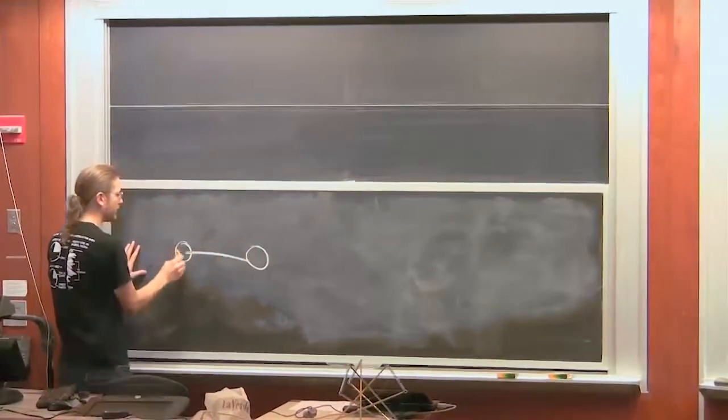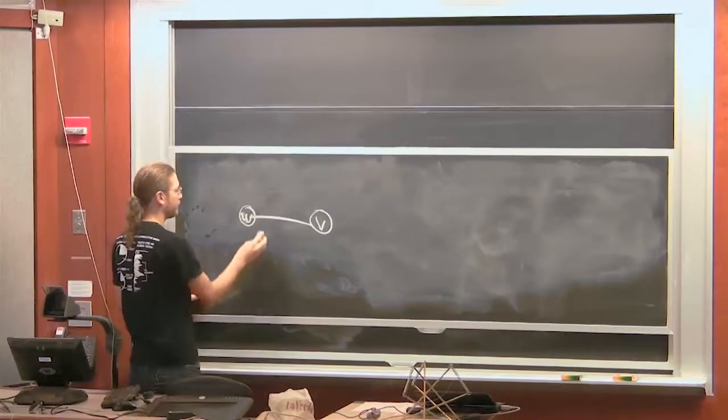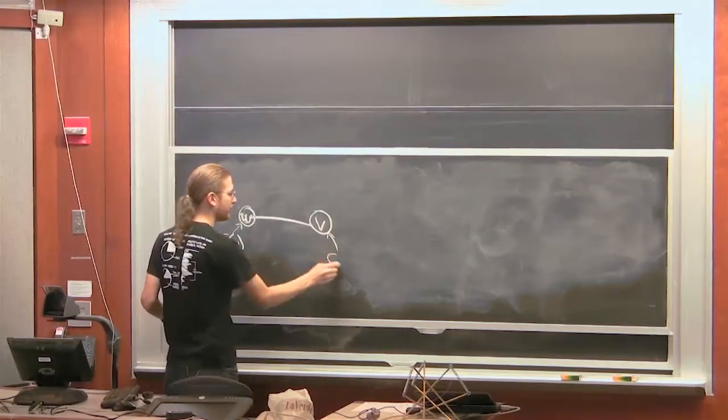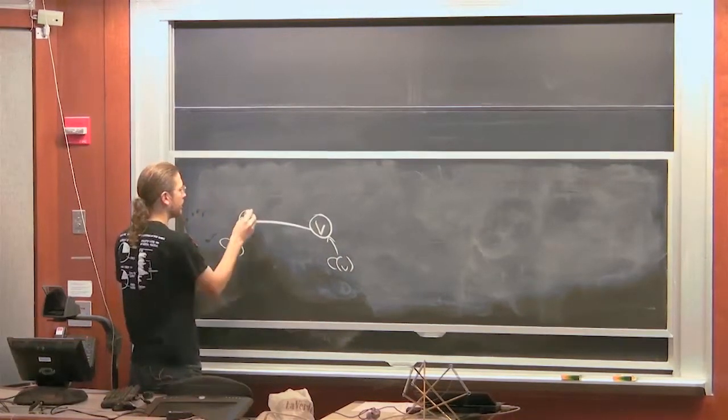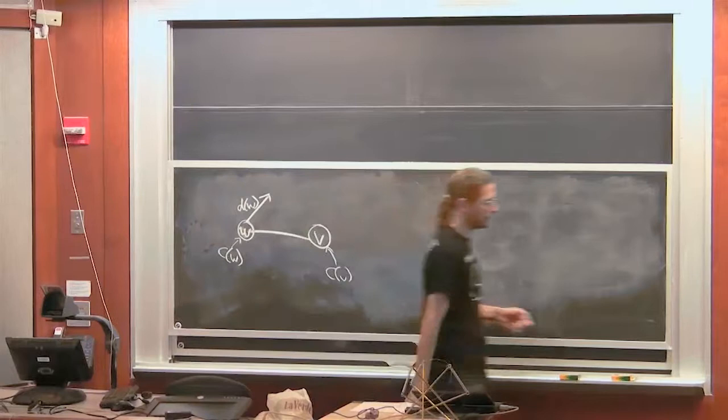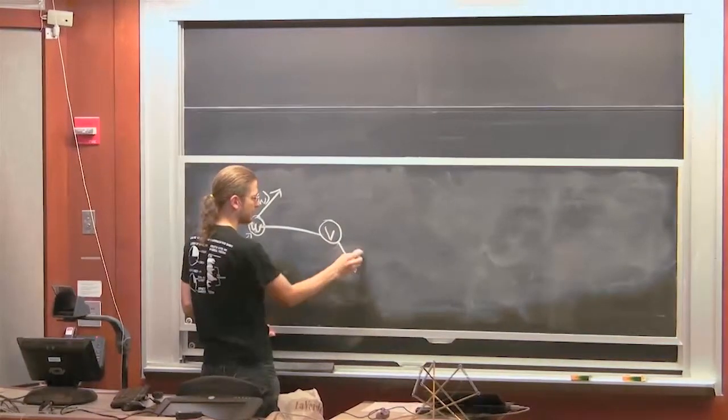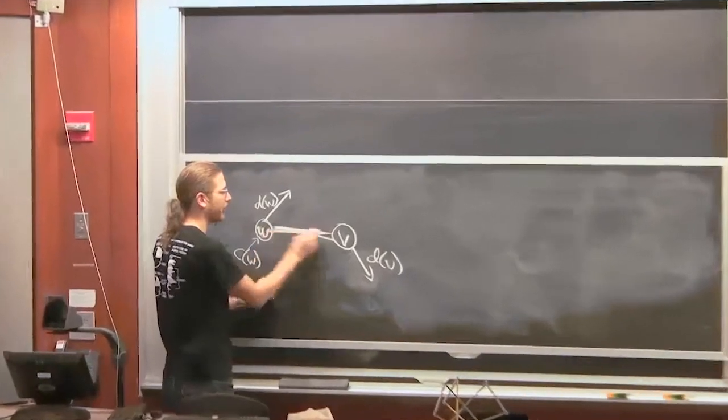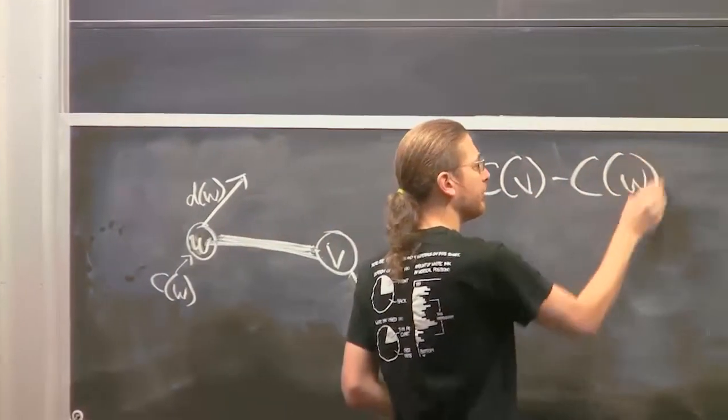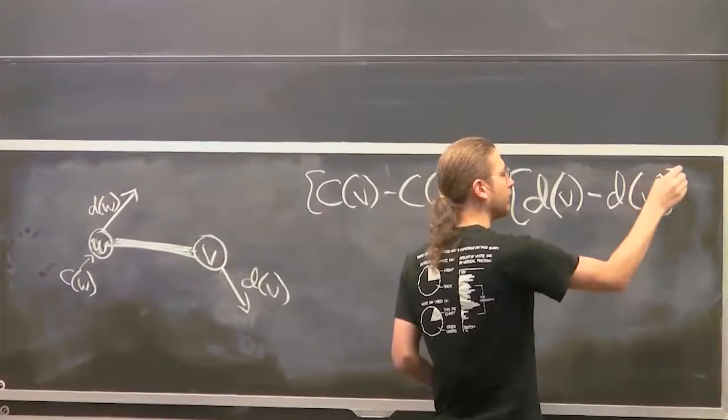So say we have an edge vw. Actually, I think I'll draw it w on the left. So here's vw. We would think of this point as being c of w. That's your configuration. This point is c of v. Then we were talking about when, if you have a velocity vector, d of w, and a velocity vector, say something like this, d of v, when it preserves the length of this bar to the first order. And the condition we had was c of v minus c of w dot product with d of v minus d of w equals 0.